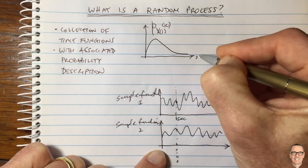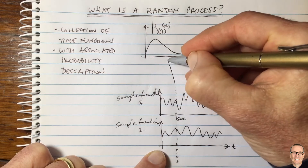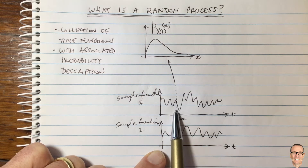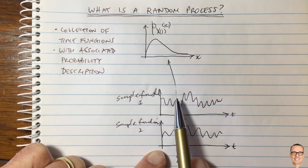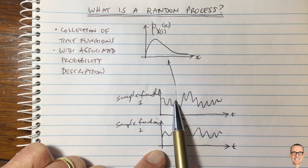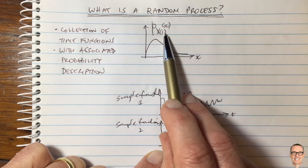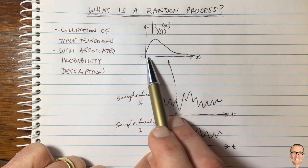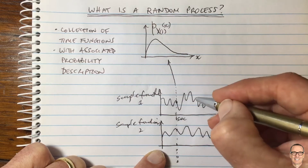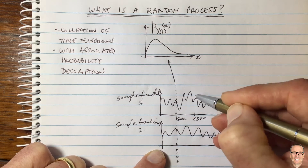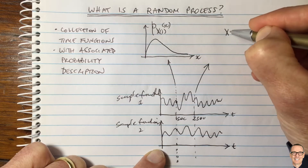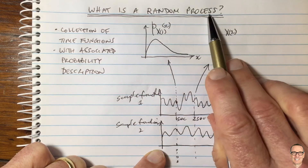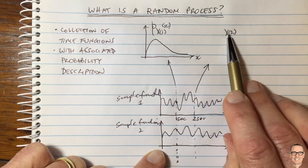We have videos on the Rayleigh distribution on the channel if you'd like more information. The important thing here in terms of random processes is that at a particular time — we've picked one second, but we could pick any time — the value is random, which means in each of the different sample functions it takes a different value. The distribution of those values is x1, the random variable at time one, and it has a Rayleigh distribution. Let's look at another time, say two seconds. At this time we get another random variable, a different one — this is x at time 2. They come from the same random process, but at a different time they are a different random variable.